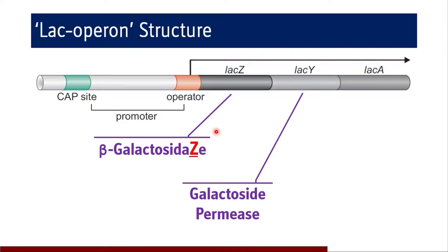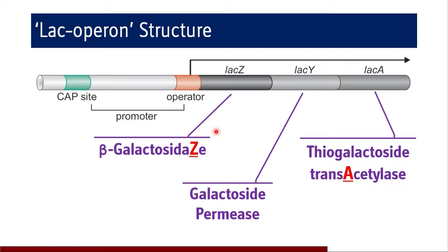Gene Y transcribes for galactoside permease, and gene A transcribes for thiogalactoside transacetylase. The naming is deliberately kept to show linkage: 'Z' in beta-galactosidase links to gene Z, 'A' in transacetylase links to gene A, and by exclusion, gene Y is remembered for galactoside permease.